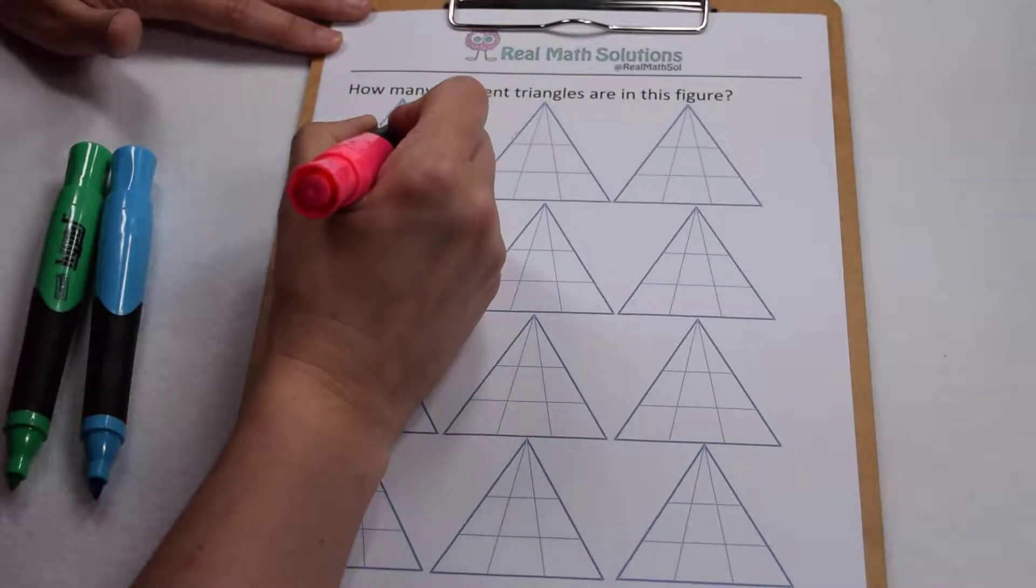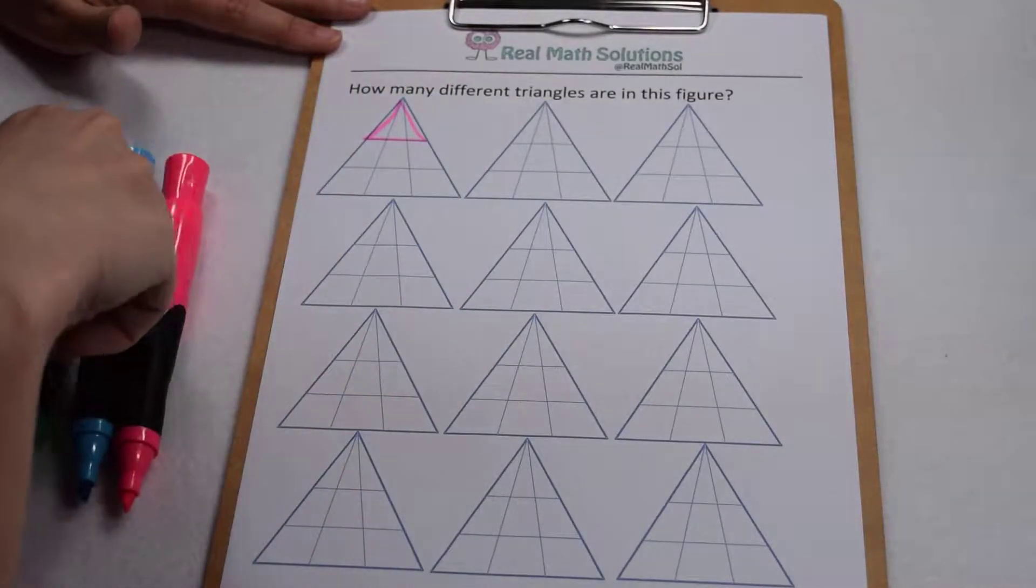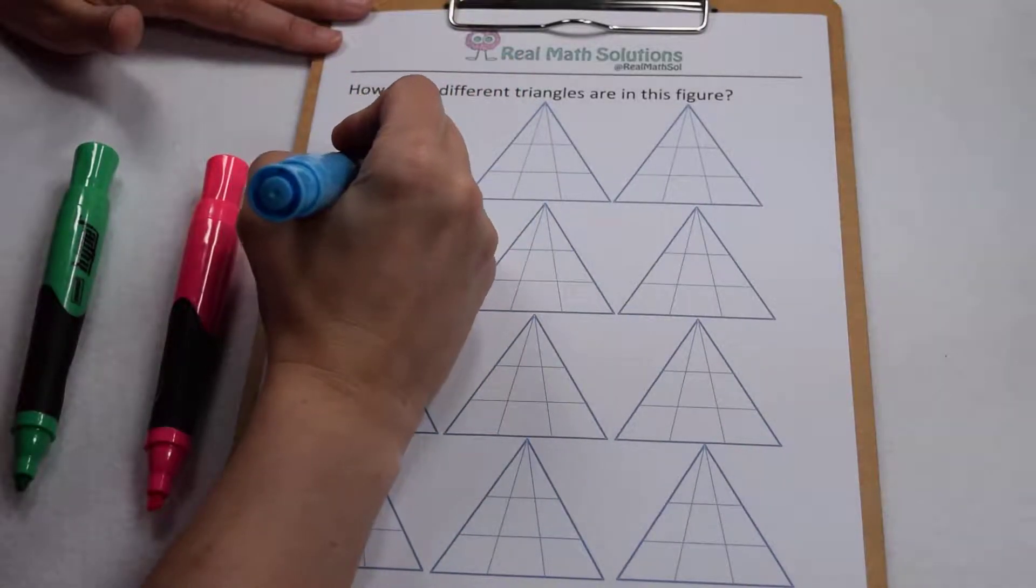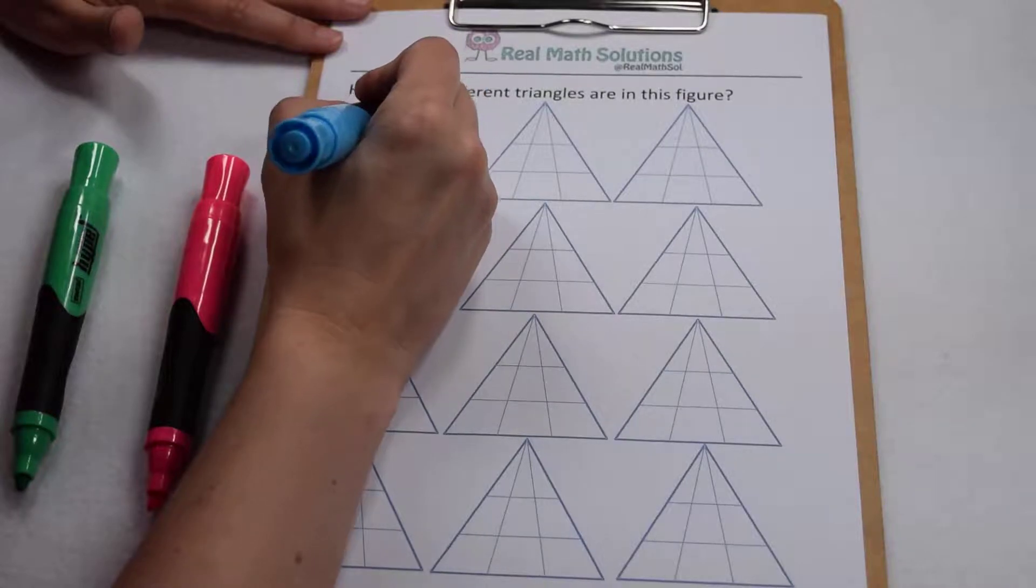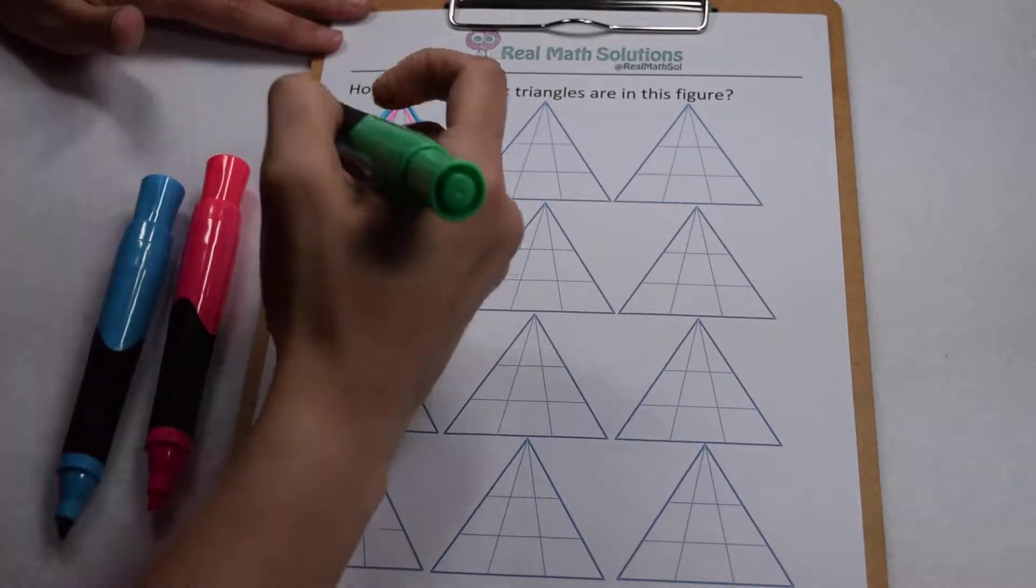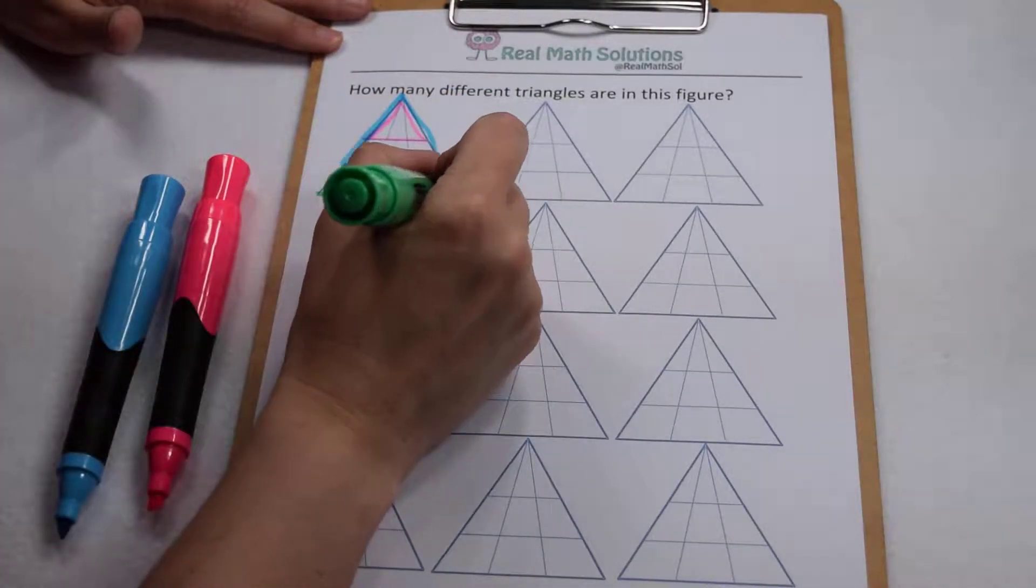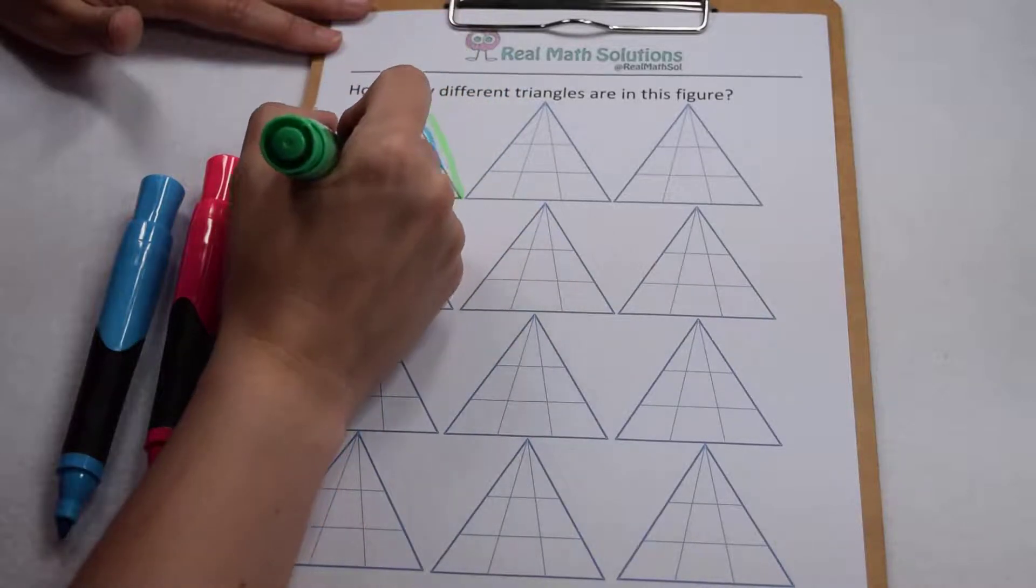To start with, let's start with the actual triangles. There's one triangle here at the point, there's two triangles if we take that second level, and there's three triangles if we go all the way to the bottom.